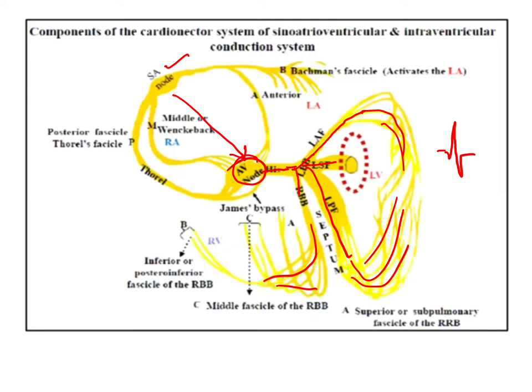These QRS complexes are very sharp and of short duration. A normal QRS complex in an ECG is usually less than 120 milliseconds, or we can say less than three small squares. This is the normal conduction system of the heart.